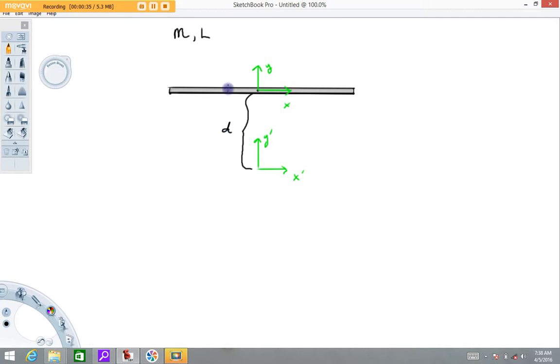Now we know by direct integration that the moment of inertia of a bar with an axis right through its center is 1/12 ml squared.